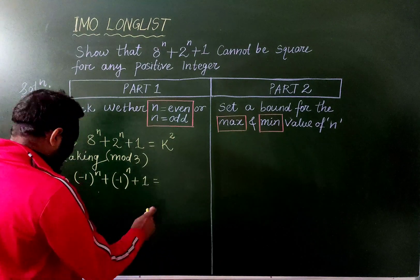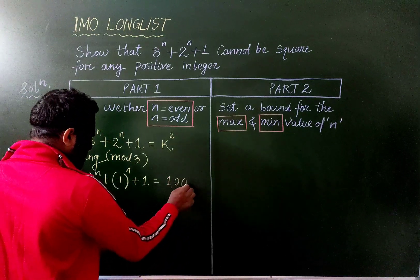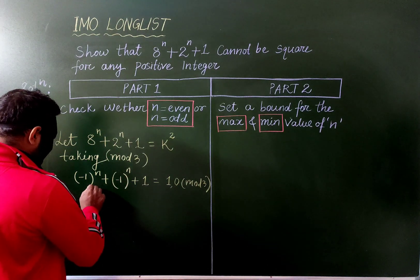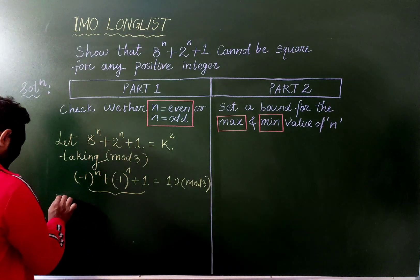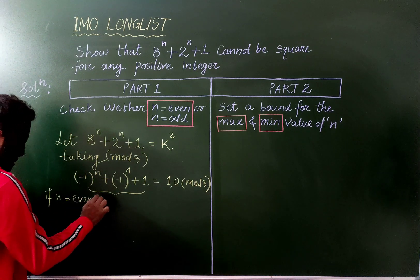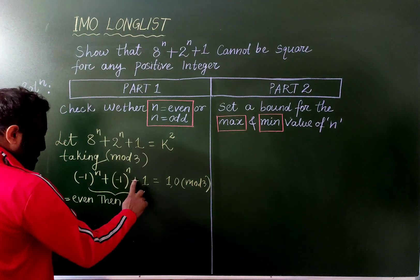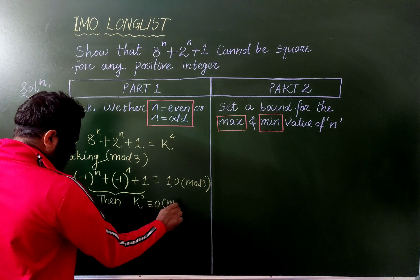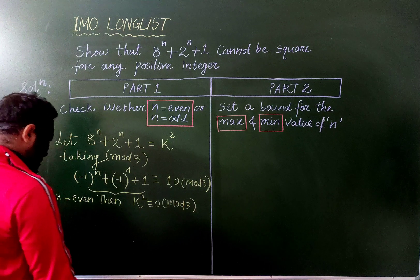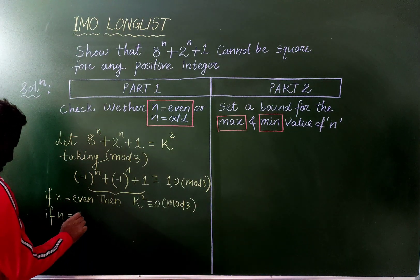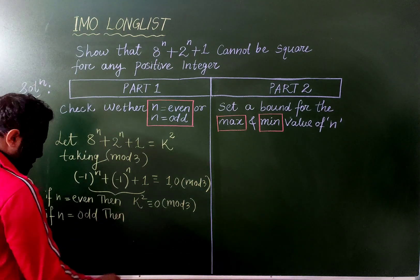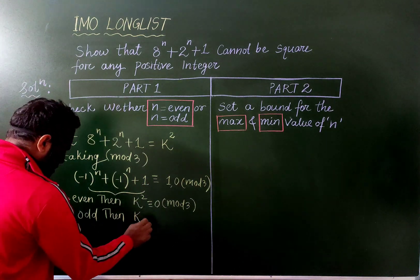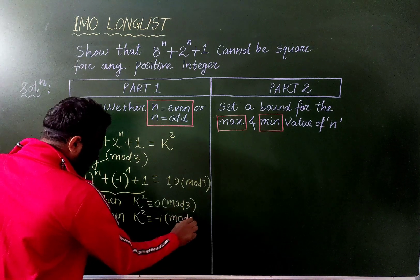Now, for any integer k, k squared mod 3 is either 1 or 0. If n is even, then (−1)^n = 1 and (−1)^(n+1) = −1, so the total is 1 + (−1) + 1 ... wait — actually the sum gives 0 mod 3, so k squared ≡ 0 mod 3, which is possible. But if n is odd, then we get −1 − 1 + 1 = −1 mod 3, meaning k squared ≡ −1 mod 3, which is not possible.